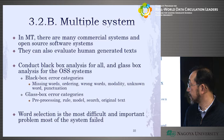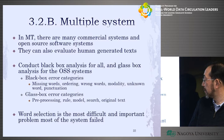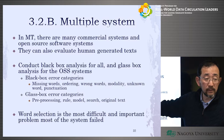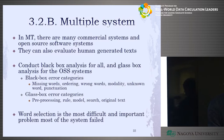Finally, they conclude that word selection is the most difficult and important problem — most systems failed at it. Using six systems, they found this was a very common, widespread problem.